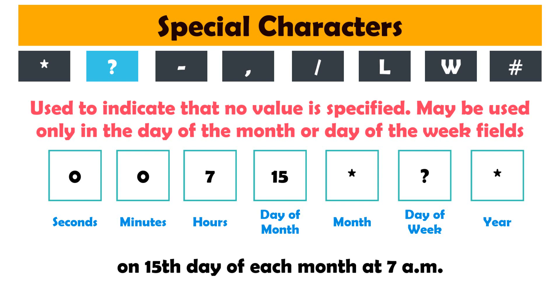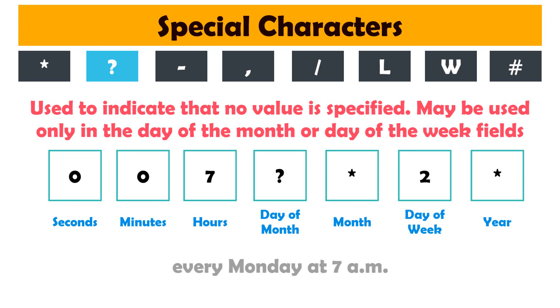But if we replace the day of the month with a question mark and specify a certain day, for example '0 0 7 ? * 2', that means that the bot should be triggered every Monday at 7 a.m.